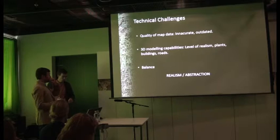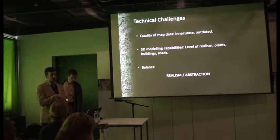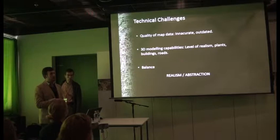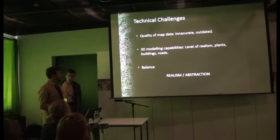Technical challenges mainly deal with the quality of map data. All these landscape models are built upon cartographic information — map data that we get from the land survey in Finland and the land survey in Estonia. We found out that there are a lot of inaccuracies in the map data, a lot of outdated information, and this meant that we had to put a lot of extra time on improving the models and making them more accurate. And then of course there are the software capabilities — it's not a perfect thing, so there's a certain level of realism that you cannot go beyond.